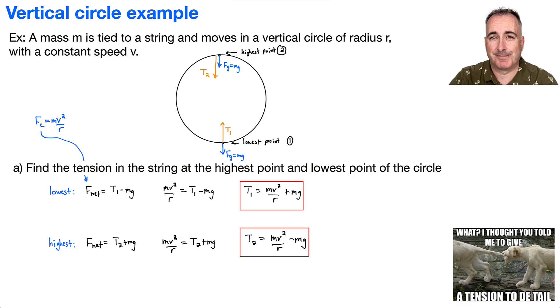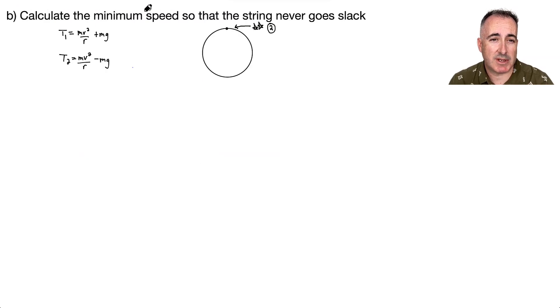Okay, let's do part B. So in part B, we want to calculate what's the minimum speed so that the string never goes slack. And what do we mean by that? We mean at the top right here, for example, that's going to be when the string can go slack. Because at the bottom, it's always going to be pretty tight here. But at the top, we're just going just the minimum speed. So we actually just care about this T2 one. That was the one at the top here. That's the one we care about. We actually don't care about T1. Not in this part B, at least.